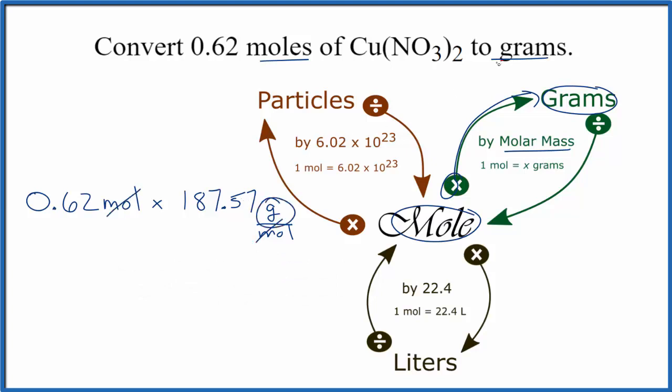That leaves us with grams, and that's what we're looking for. So we know we've set the problem up correctly. We multiply and get 116.29 grams of Cu(NO3)2.